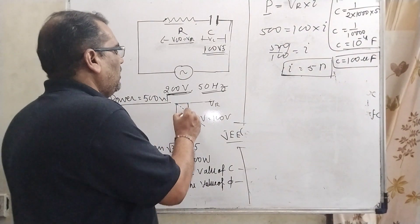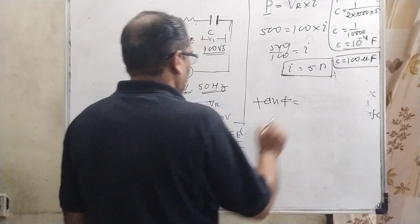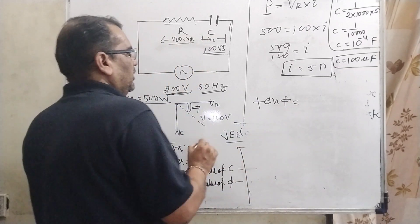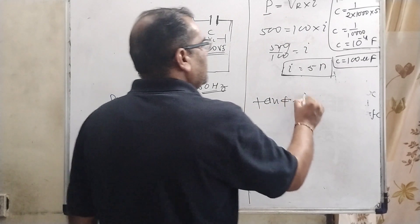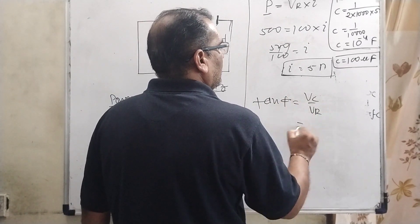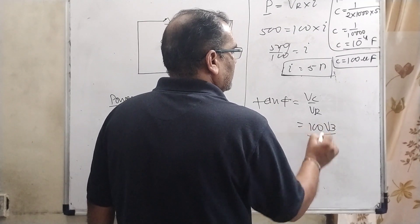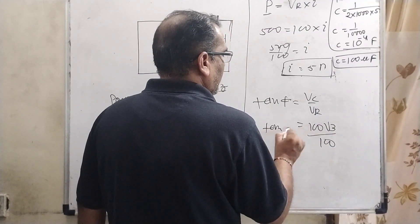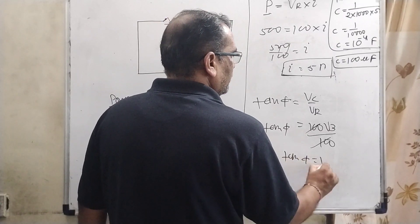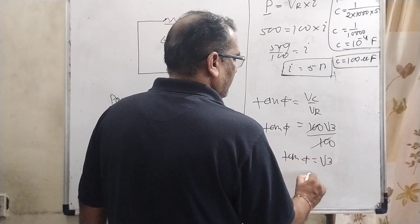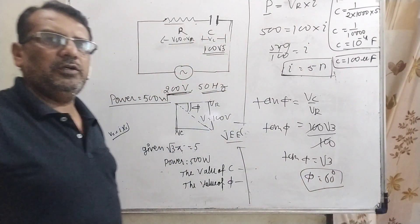Now we find the phase angle. As we know, tan φ equals V_C divided by V_R. V_C is 100√3 and V_R is 100, so the 100s cancel and tan φ equals √3. Therefore φ equals 60 degrees.